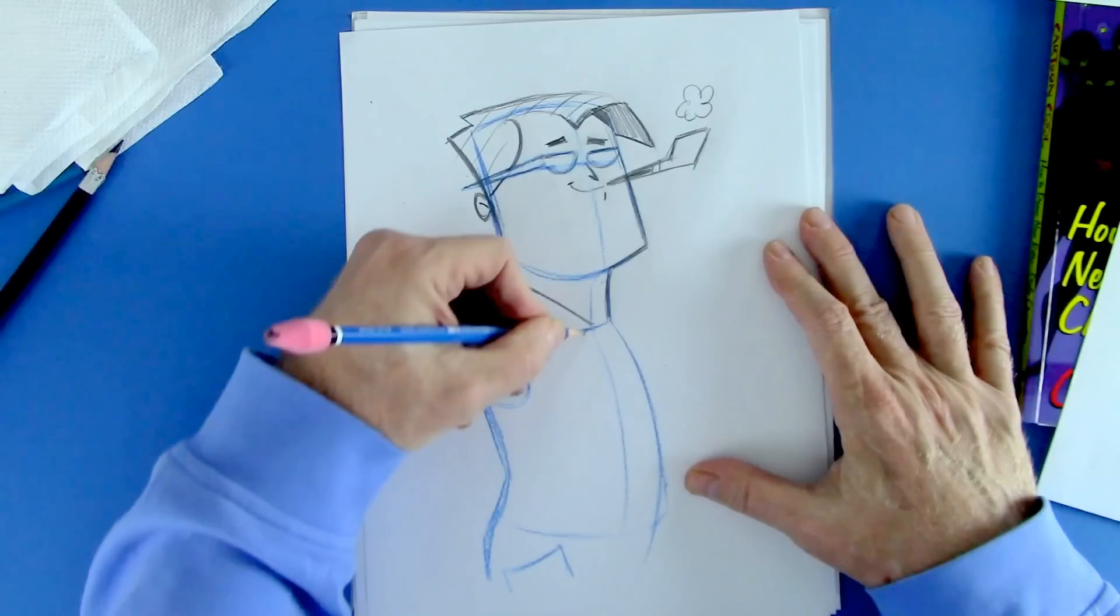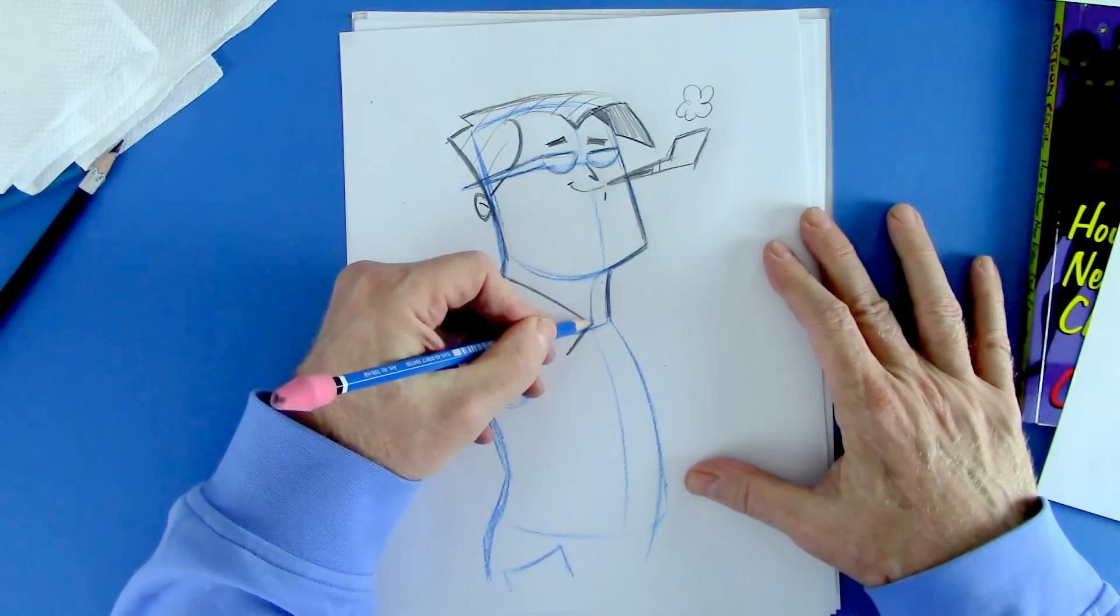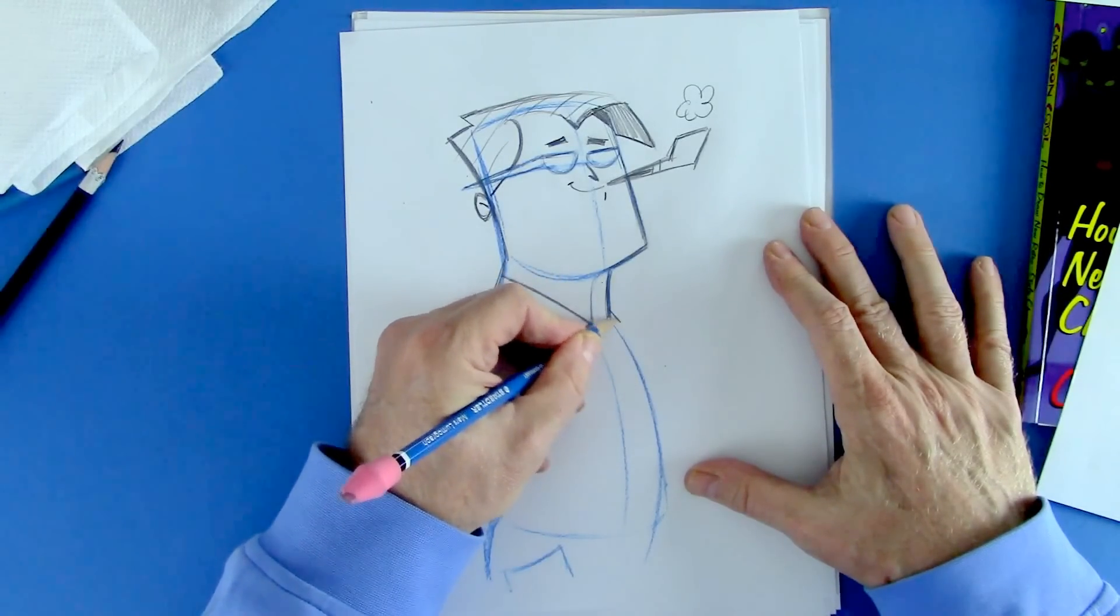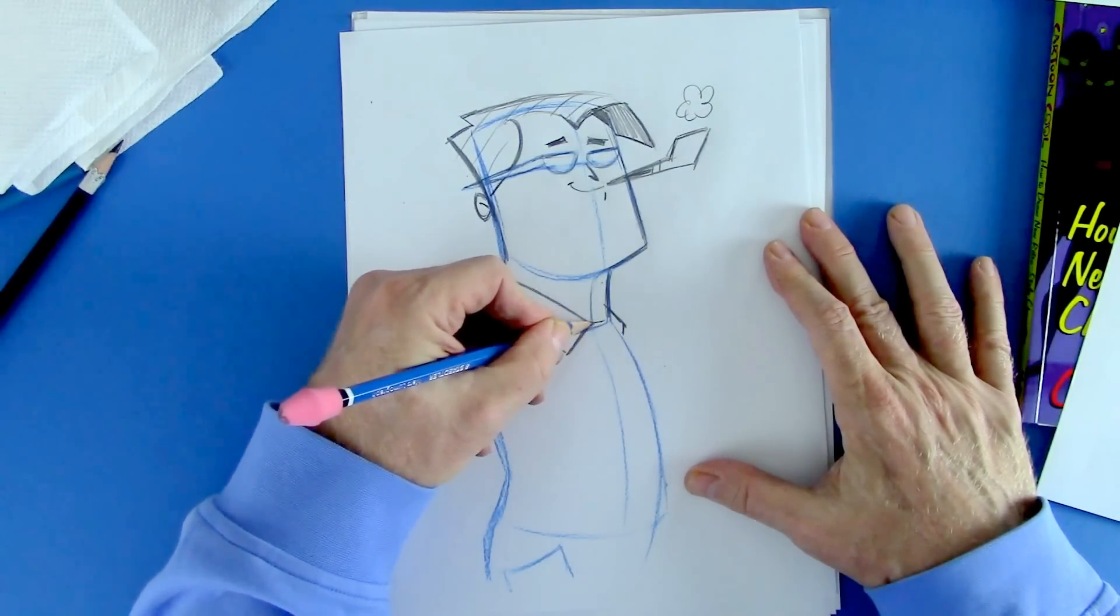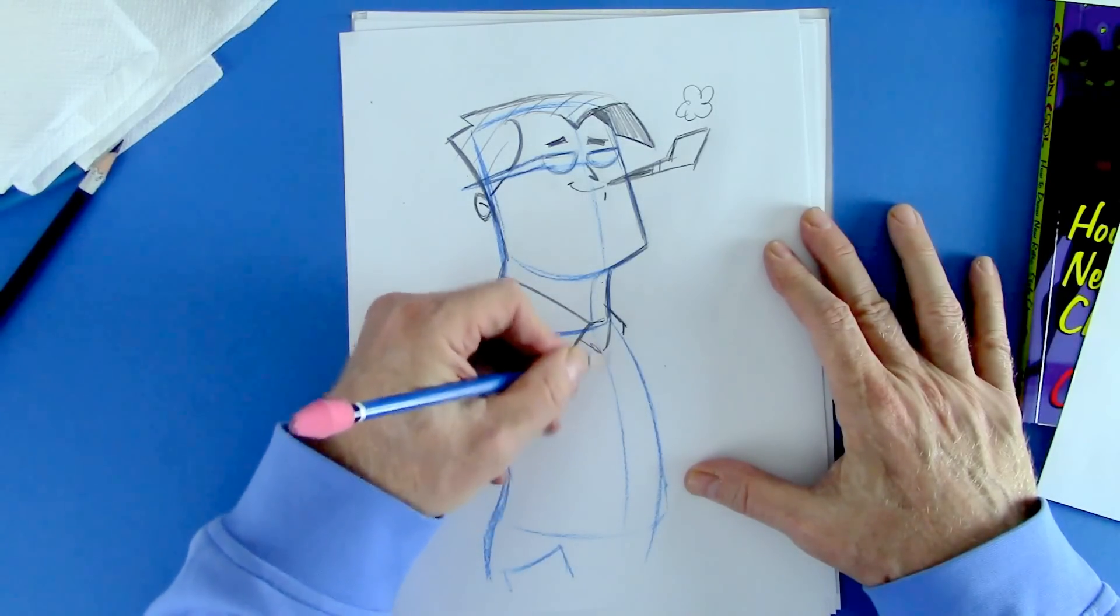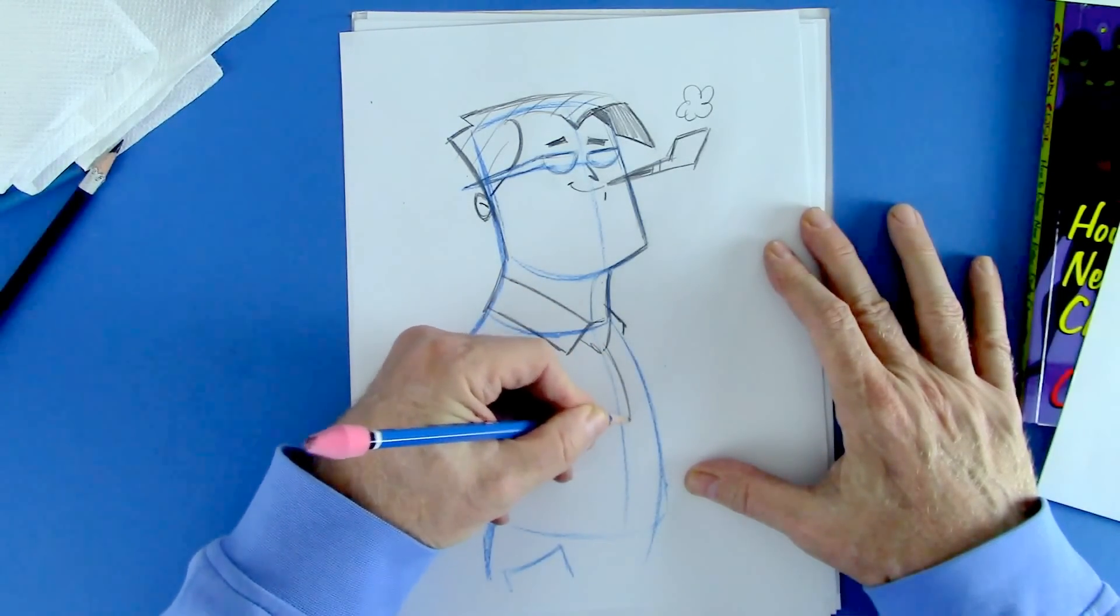Here is the collar right down the center line. See, right down the center line and this side here. Now that tie bumping through, again following the center line, so it's not going to be straight down but around the tummy like this.